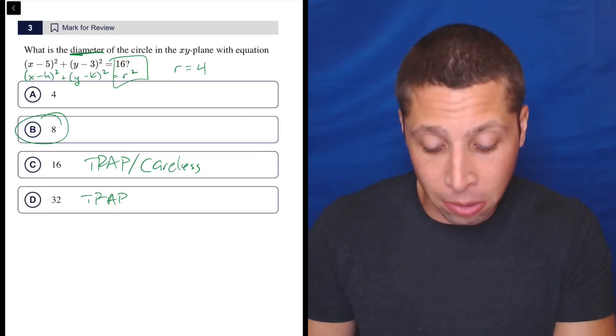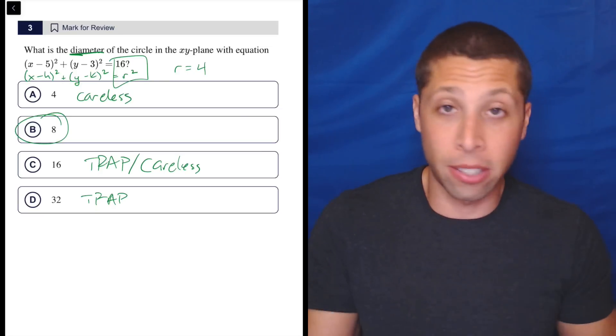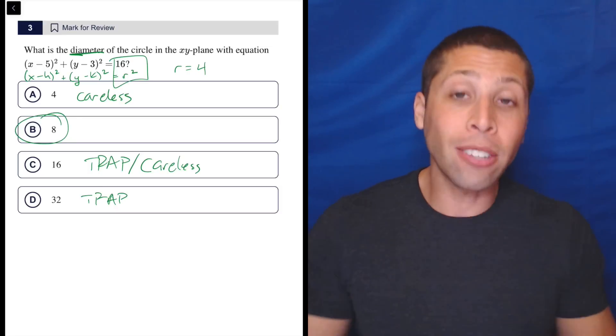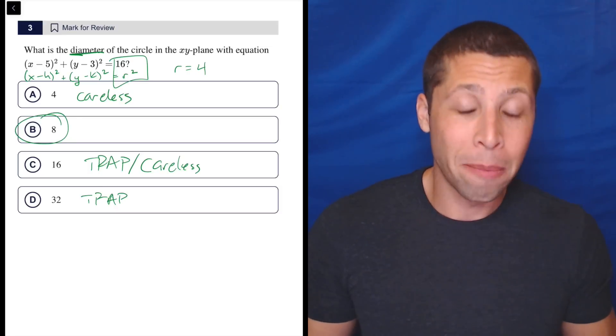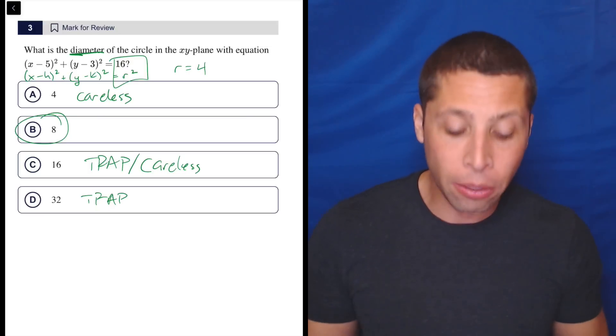And then 4, right? This is just read the question. This is careless because you didn't read what they wanted. Yes, the radius is 4, but they wanted the diameter. A simple move is just doubling it. So every answer choice here is wrong but kind of right. Just right enough that it might be tempting to us. So really be careful.